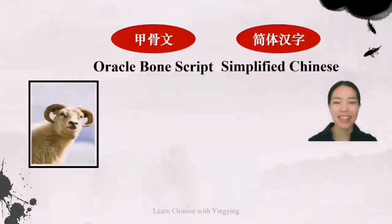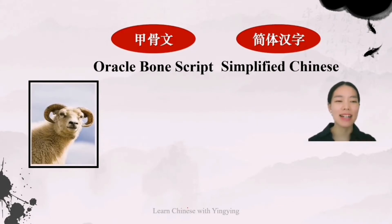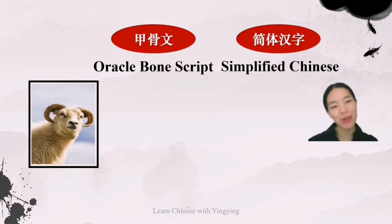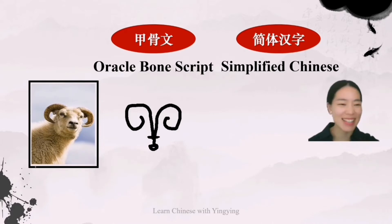Let's look at the second word: that is 羊 (yáng). It means goat. Look at this picture — how would you sketch it? Well, this is quite a truthful sketch of the goat, isn't it?